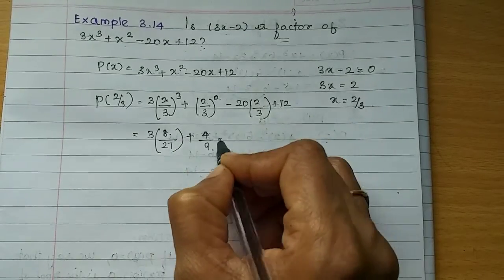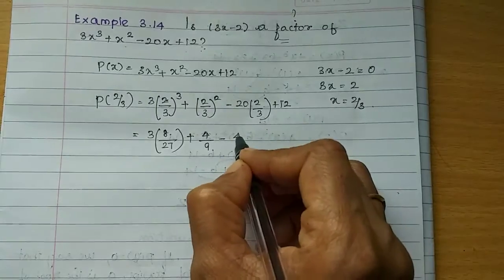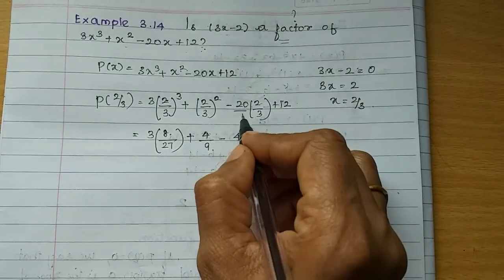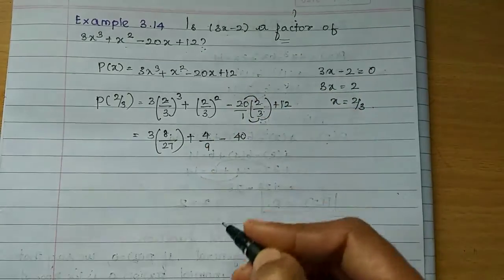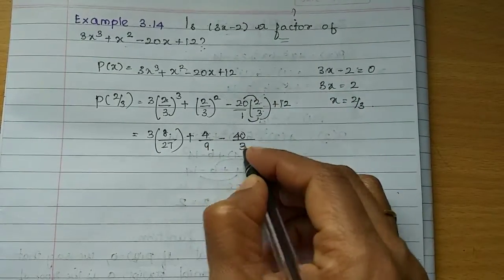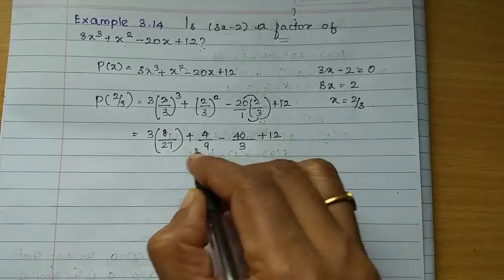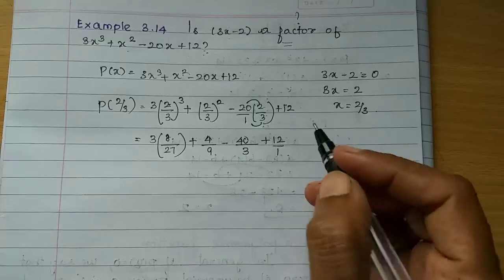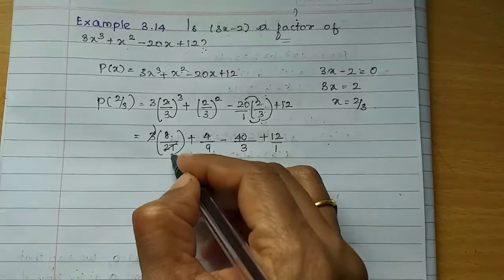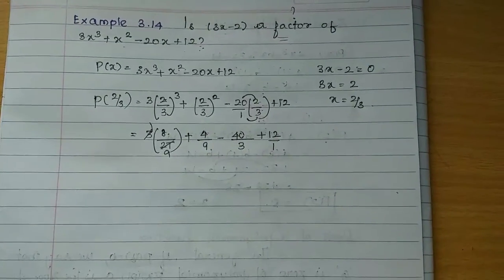Minus 20 into 2 is 40 by 3, plus 12. Multiply numerator into numerator and denominator into denominator. 40 by 3 equals 12. You will also add a fraction by 1. 3 ones are 3 and 3 nines are 27. Now, denominator is 9, 9, 3, 1 equals 9.